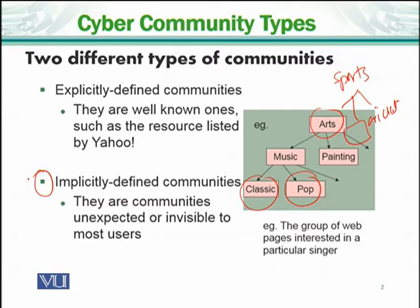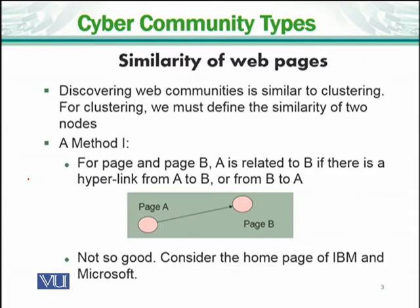The second type is implicitly defined communities. This is a community which is not defined and is unexpected — not directly available. For example, while searching on the net, you might encounter a classmate. You cannot predefine this, but then you recognize it as a community and can later move it into an explicit community.